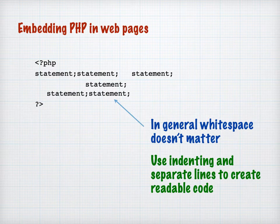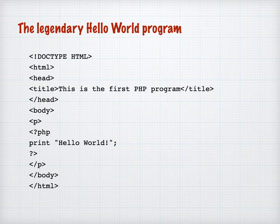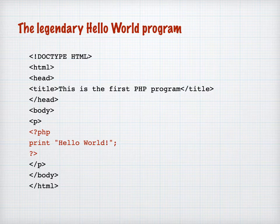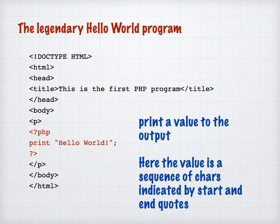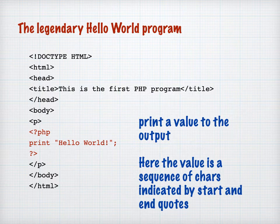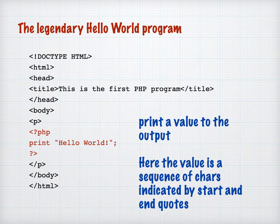Let's have a look at the legendary first program that everybody always starts off with — that's the Hello World program. Here's the HTML, and you can see the PHP block highlighted in red. I've got a starting PHP statement with a less-than, question mark, PHP, and then the statement 'print hello world'. What this does is print a value at that point into the HTML document before the document is passed back to the browser. We're printing the characters H-E-L-L-O space W-O-R-L-D exclamation mark, and if we want to print a series of characters we wrap them in quotes — that's called a string.